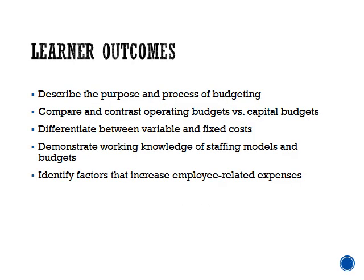The learner outcomes for Topic 5 are listed in your syllabus and on Canvas. This is what you'll accomplish by the end of the week. You'll describe the purpose and process of budgeting, compare and contrast operating budgets versus capital budgets, differentiate between variable and fixed costs, demonstrate a working knowledge of staffing models and budgets, and identify factors that increase employee-related expenses.